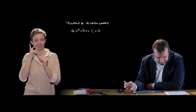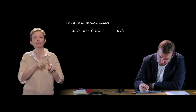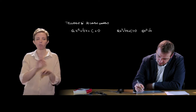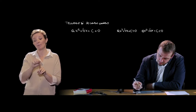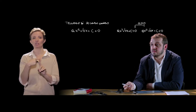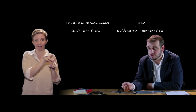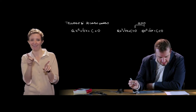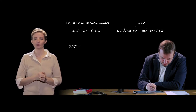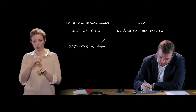Immaginiamo di dover studiare AX² + BX + C > 0, oppure AX² + BX + C < 0. Consideriamo i casi in cui A sia positivo. Nel caso in cui A fosse negativo, basta cambiare i segni e modificare il verso della disequazione. Quindi ci limitiamo a studiare il caso A > 0. Con A > 0, per AX² + BX + C > 0 abbiamo tre possibilità in funzione del delta.